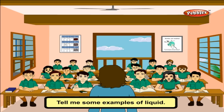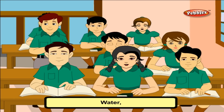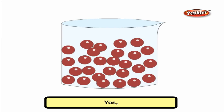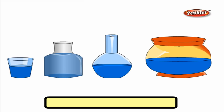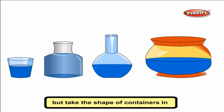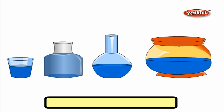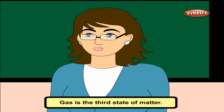Tell me some examples of liquid. Water, milk, kerosene, petrol and juices. Yes! In liquids, the molecules are not very closely packed. Liquids can flow, so they are called fluids. They do not have a shape of their own like solids, but take the shape of the containers in which they are poured. They always have a definite volume.